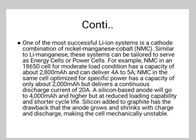The secret of NMC lies in combining nickel and manganese — analogous to table salt, where sodium and chloride are toxic individually but useful combined. Nickel is known for its high specific energy but low stability. Manganese forms a spinel structure achieving very low internal resistance but offers low specific energy. Combining the metals brings out the best in each. NMC is the battery of choice for power tools and power trains for vehicles. The cathode combination of one-third nickel, one-third manganese, and one-third cobalt offers a unique blend and lowers raw material cost due to reduced cobalt content.